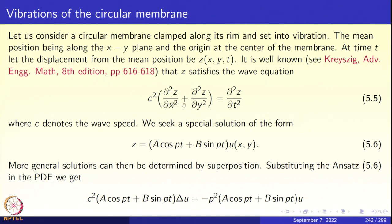The derivation of the wave equation from Newtonian mechanics is found in, for example, Kreyszig's Advanced Engineering Mathematics, 8th edition, pages 616–618. The wave equation is equation 5.5; c is the velocity of the wave, taken to be constant for a uniform membrane. We seek a special solution of the form z = (a cos pt + b sin pt) · u(x, y) — these are like standing waves.